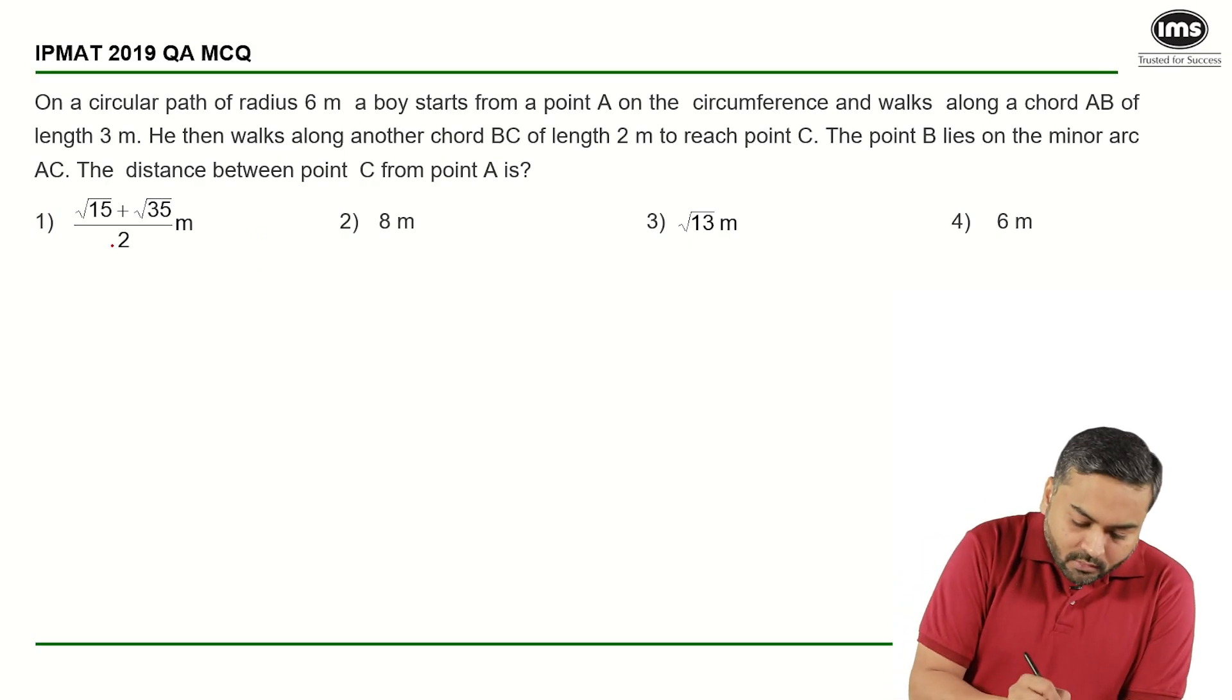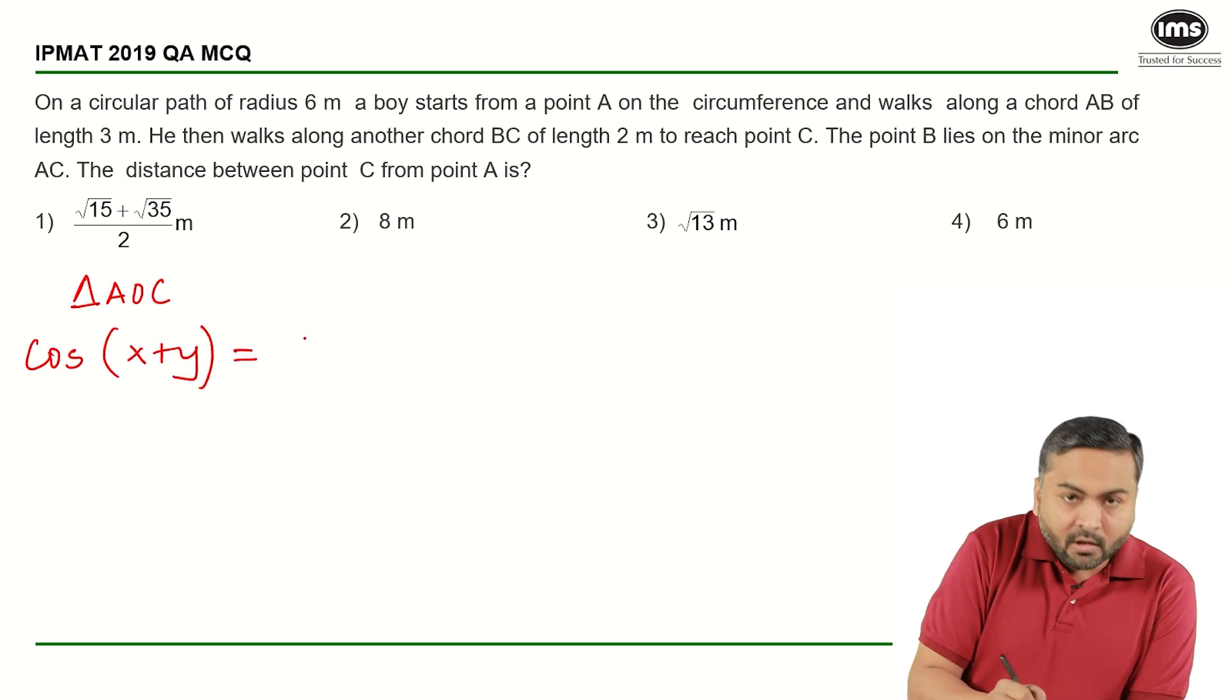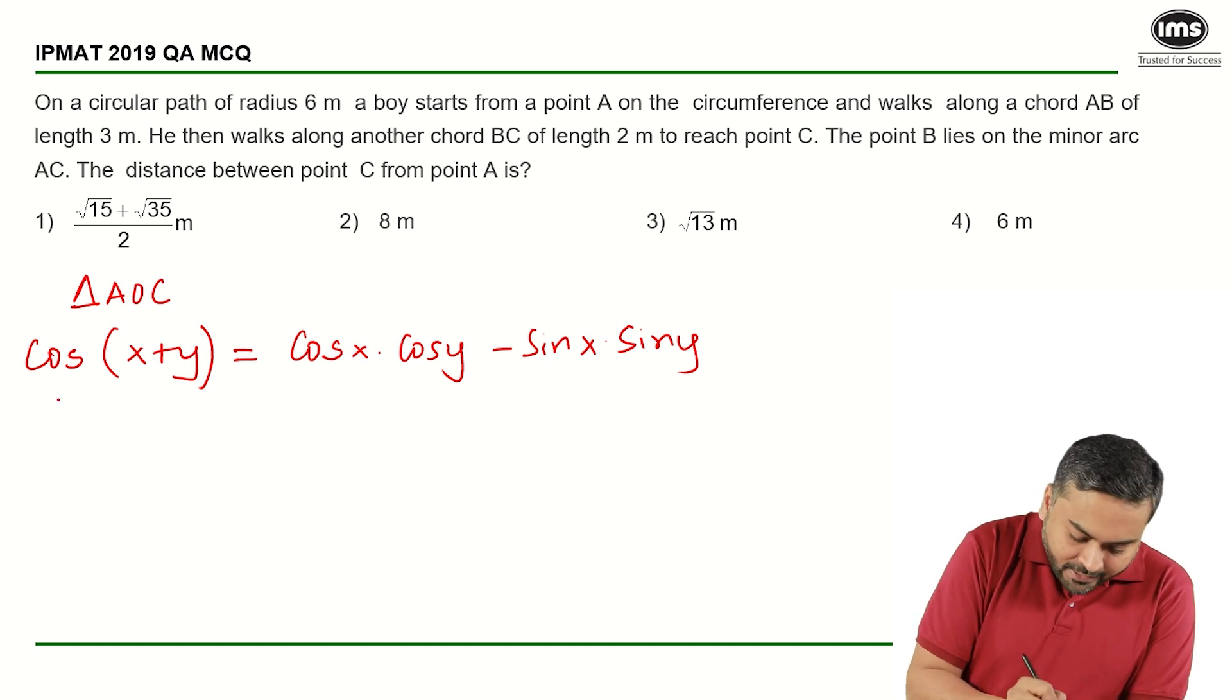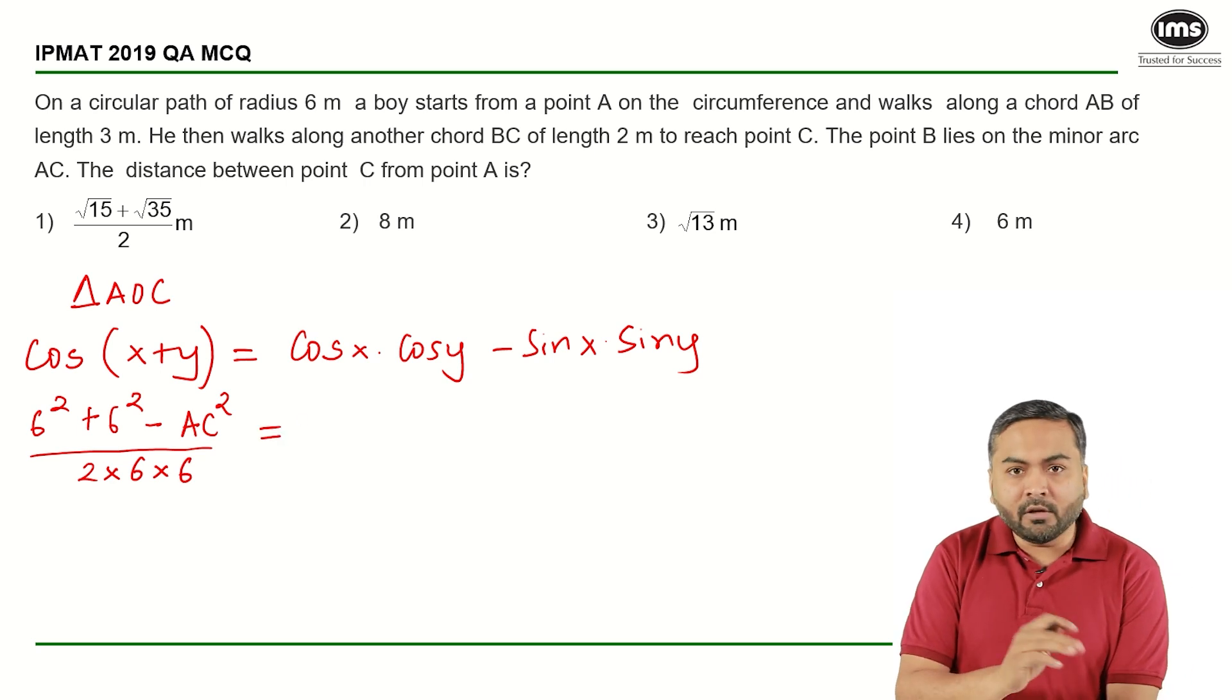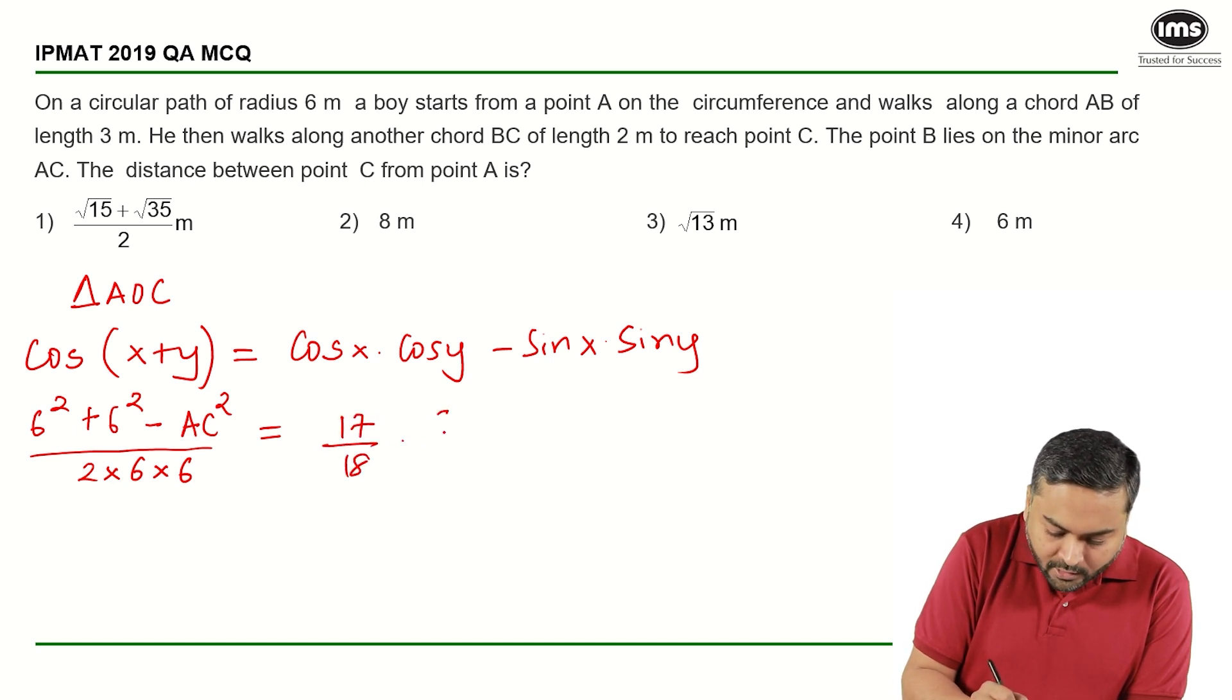Now if I use, in triangle AOC, if I say that cos of x plus y is equal to cos x cos y minus sin x sin y. Now cos of x plus y is the entire angle. I can use the cosine rule here again and I will get 6 square plus 6 square minus AC square upon 2 times of 6 into 6. And from the previous slide I know the values of cos x, cos y, sin x, sin y. So that gives me 17 by 18 into 7 by 8 minus root 35 by 18 minus root 15 by 8.